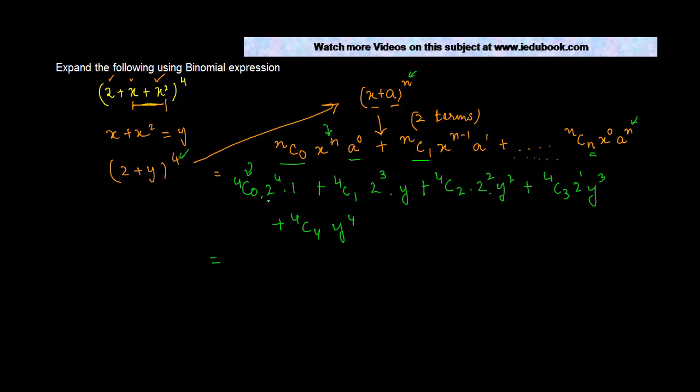This is 1 × 16 = 16, plus ⁴C₁ which is 4 into 8 into y, so 16 + 32y, plus ⁴C₂ which is 6 into 4 into y², so 24y².